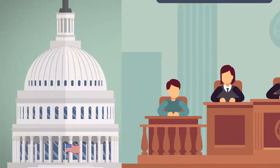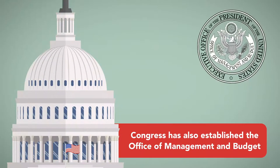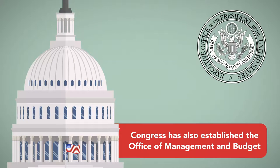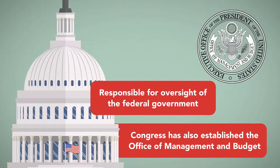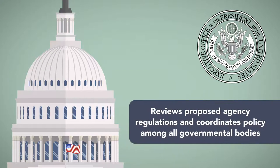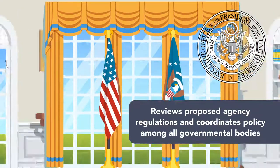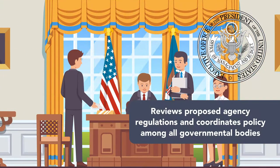Congress has also established the Office of Management and Budget — itself a federal agency — which is responsible for oversight of the federal government, including agencies, and which reviews proposed agency regulations and coordinates policy among all governmental bodies to reflect presidential priorities.